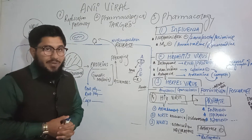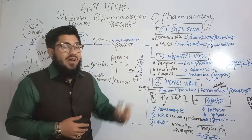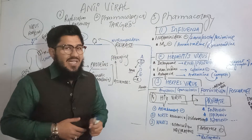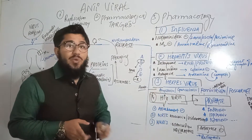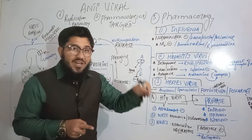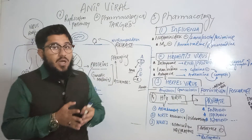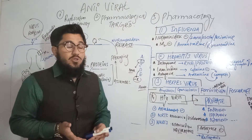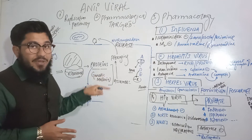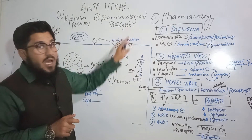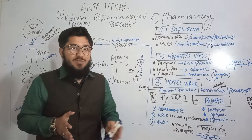The reason we discuss this life cycle of replication is simple: if you know the life cycle, it becomes very easy to identify the pharmacological targets. This means understanding where the drugs act — their sites of action and mechanisms of action. Knowing the site makes the mechanism much easier to understand. My main concentration in discussing the life cycle will be the pharmacological targets, without going into excessive depth, as we've already covered the full life cycle in our first video.